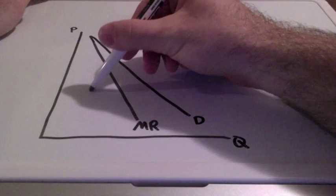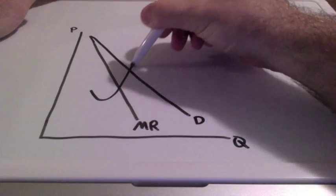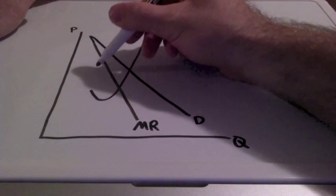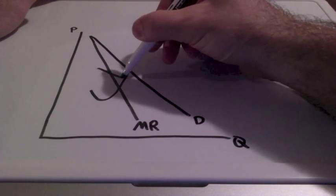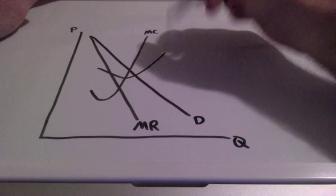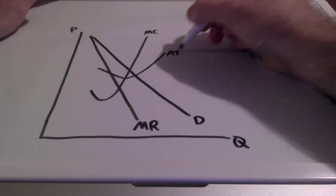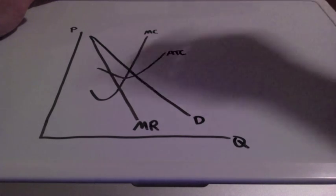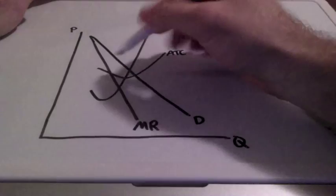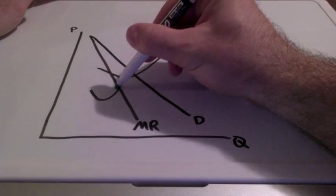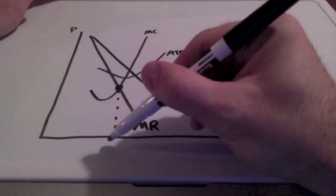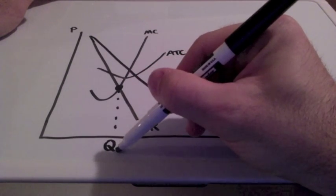We need to bring in two curves: the marginal cost curve and the average total cost curve. To find the profit maximizing quantity where the firm is going to produce, we need to locate the intersection between marginal revenue and marginal cost, which is located right here. We bring this all the way down — and this is the quantity for the monopoly.